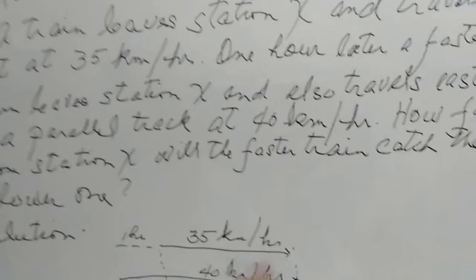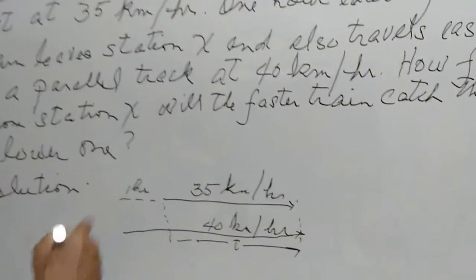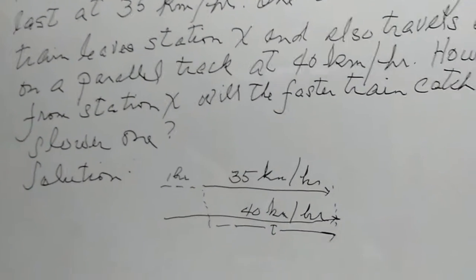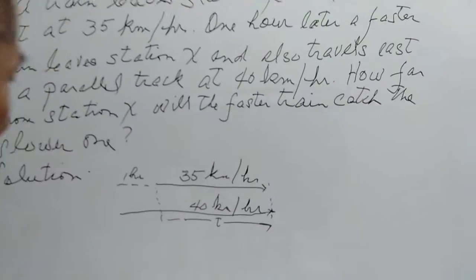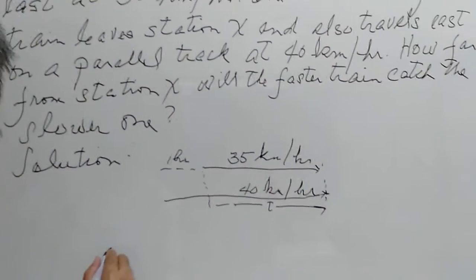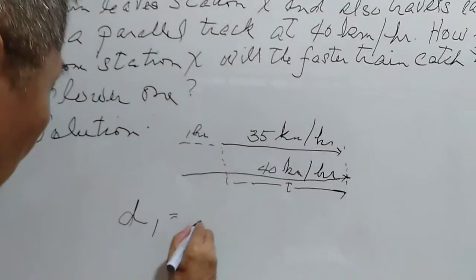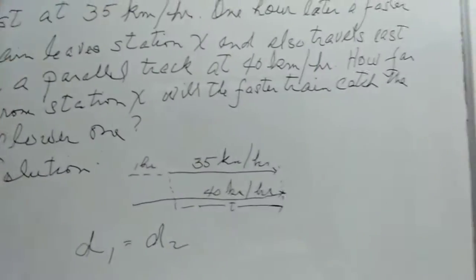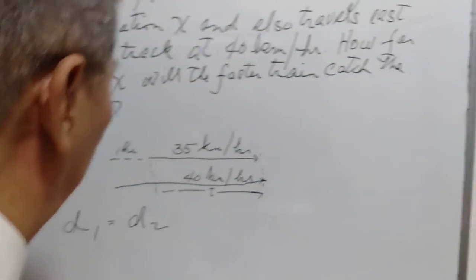The distance traveled by these two trains is equal. So we have here d1 is equal to d2. As you know, we have this formula here for distance.